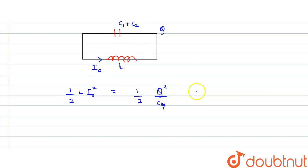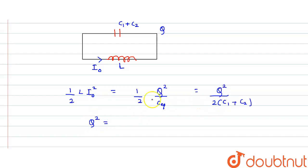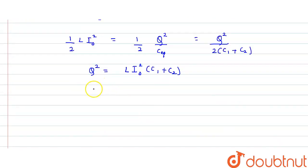This is how we write the energy for a capacitor. So this value equals Q² divided by 2 times (C1 plus C2). Now if we solve this expression, the 2's cancel, so Q² equals L·I₀²·(C1 plus C2). Therefore Q equals I₀ times the square root of L·(C1 plus C2). This is the maximum charge flowing through our circuit.